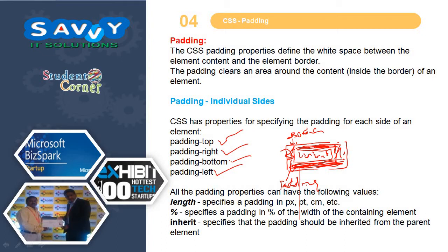All the padding properties can have the following values: Length — specifying a padding in px (pixels), pt (point), cm, etc. Percentage — specifying a padding in percentage of the width of the containing element. Inherit — specifying that the padding should be inherited from the parent element.